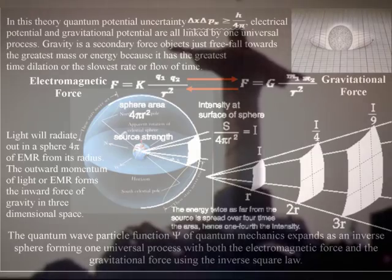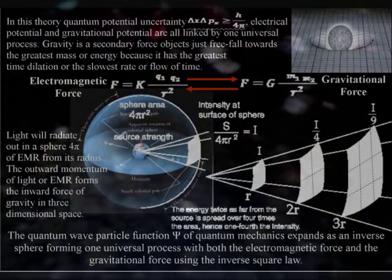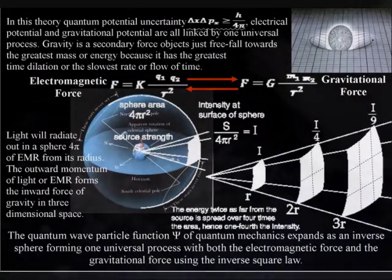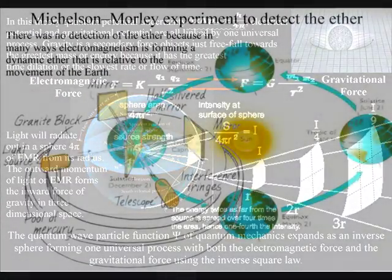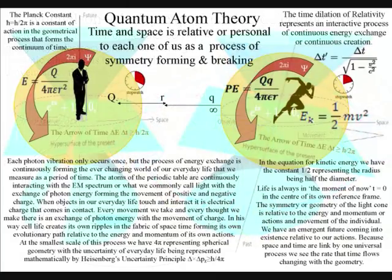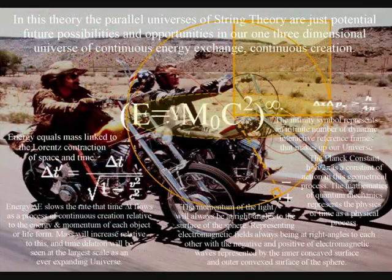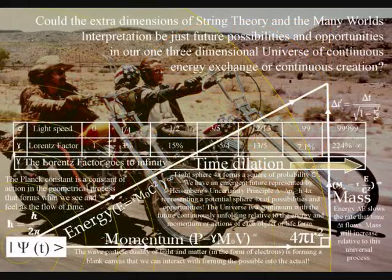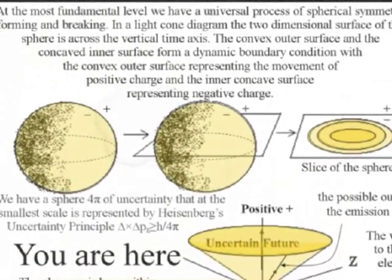Within such a dynamic process, we can think of electromagnetism as an interactive ether that moves relative to the Earth — therefore it would not show up in any experiment that was relative to the movement of the Earth. This process unites gravity with the other three fundamental forces within a universal process that is unfolding in just three dimensions, with one variable in the form of time. In such a theory, the parallel universes of string theory are just future possibilities and opportunities in our one three-dimensional universe of continuous energy exchange and continuous creation.